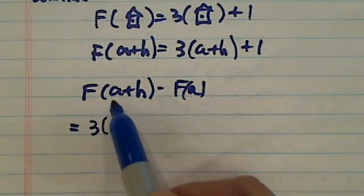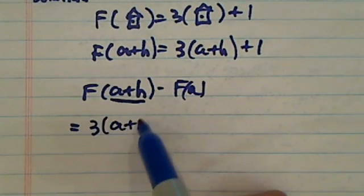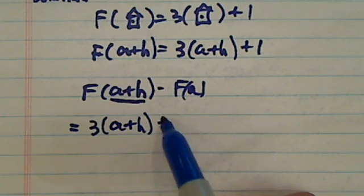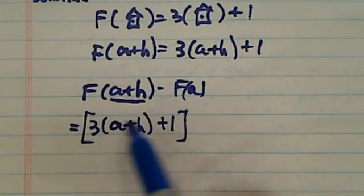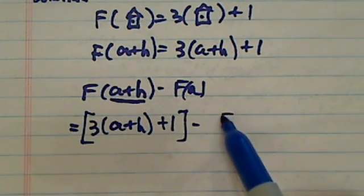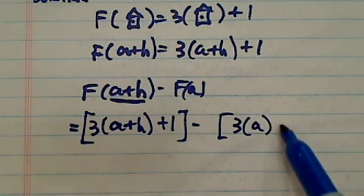So the f of a+h says 3 times whatever is in there, and then plus 1—that's my first part. Minus f of a, that means 3 times a plus 1.